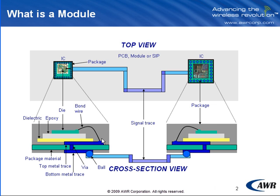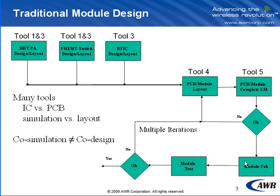This is a very complex design situation. In this example alone, we can see that potentially we're talking about four or five different technologies. Typically, people design in these technologies by choosing a tool that's optimized or specialized for that technology. So you may have an HBT PA being designed and simulated in one tool, with layout done in another tool. The pHEMT switch — if this is a front-end module for a handset — may be designed in a similar suite of software. The silicon may be designed in its own software, perhaps more layout-driven. There are many tools involved in this flow.